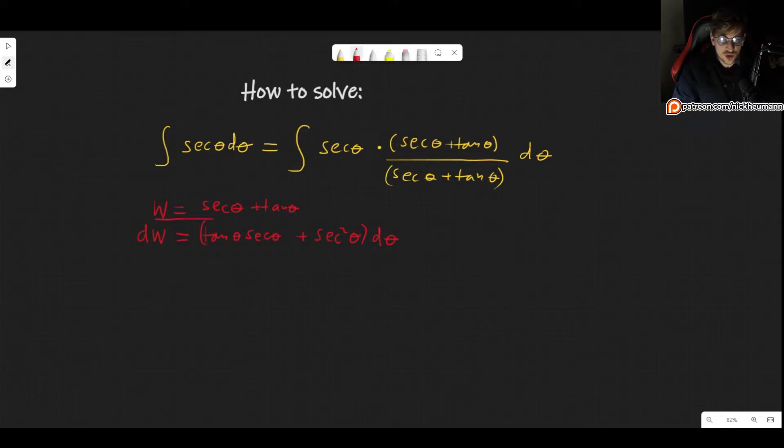And this is the reason. This is why we chose this to multiply because now we can factor out secant theta. And we still have tangent theta plus secant theta, which is exactly what we used here to multiply. And that is precisely w. So dw is the secant of theta times w. All right, so let's plug it into our integral and we will see how this simplifies everything.